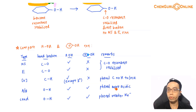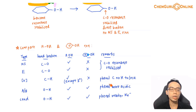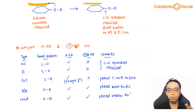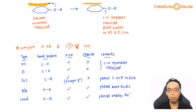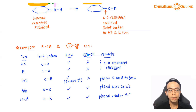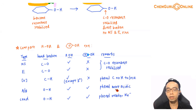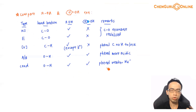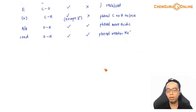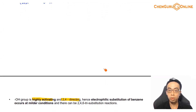In acid-base reactions, phenol is more reactive — it is a stronger acid. But in condensation reactions, phenol is actually less reactive — it is a weaker nucleophile. So when comparing reactivity, it is not clear-cut that phenol is always more or always less reactive than alcohol regardless of reaction type. We must consider the type of reaction, the mechanism, and the factors affecting that particular reaction. Generalisation is not useful and can be misleading.